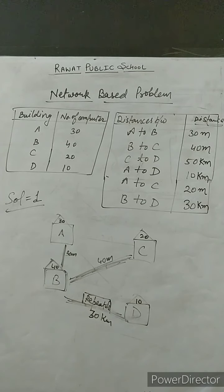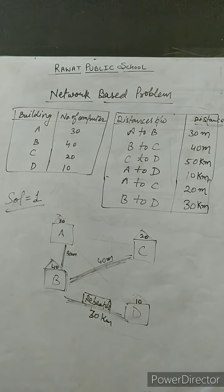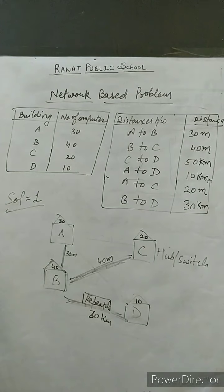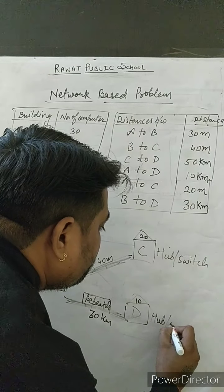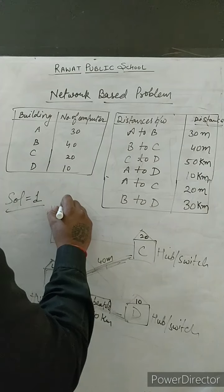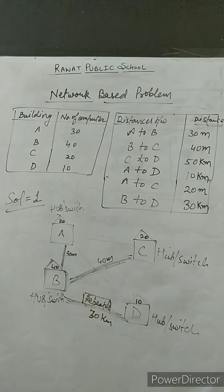The next part of question 2 is the placement of hubs and switches. As you know, hubs and switches are used to connect multiple computers within a building. Since every building has more than two computers, we need to place hubs and switches in every building — building A, B, C, and D. You can show this on the same layout diagram or draw a separate figure.